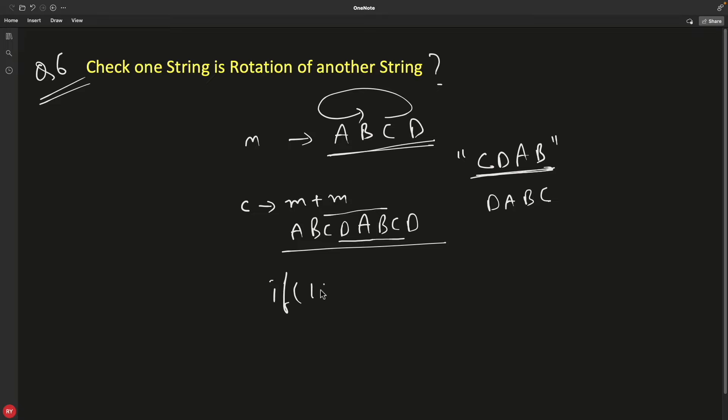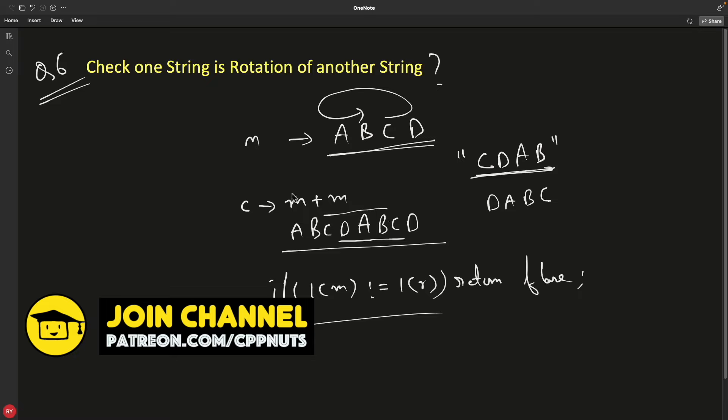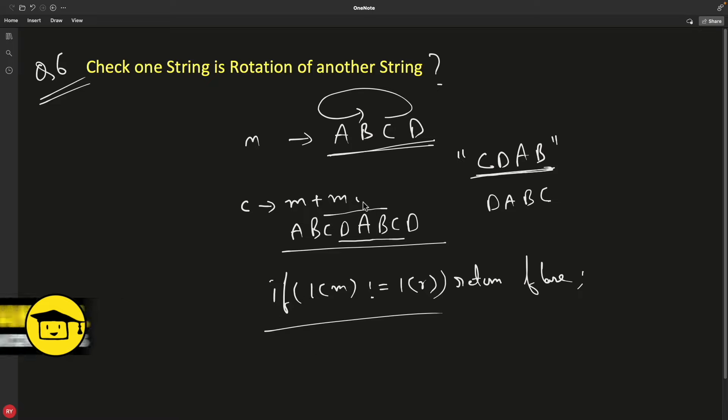So first you will check length of main is not equal to length of rotation. Then just return false. Otherwise, you will go ahead and do this concatenation and then you will try to find this particular string exist in this concatenated or not and you're done. So let's see the code now.